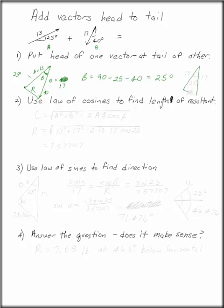Here's our triangle. 13, 17, and an angle of 25 degrees. This is what we want to find. That's the length of our resultant.